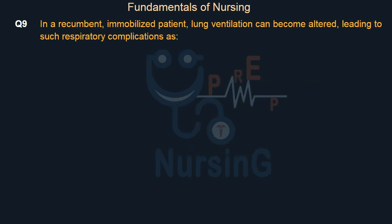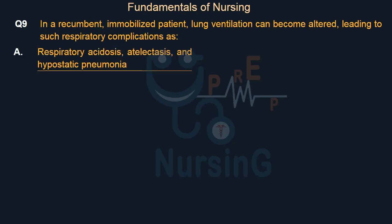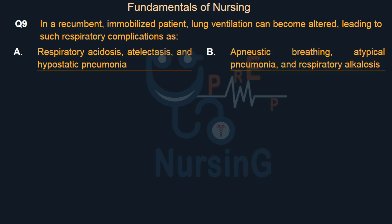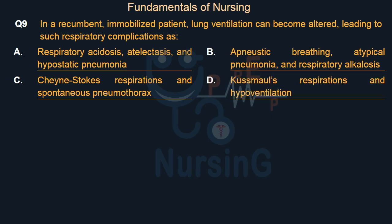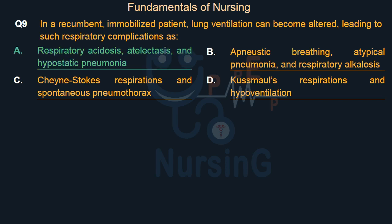In a recumbent, immobilized patient, lung ventilation can become altered, leading to such respiratory complications as: Option A: Respiratory acidosis, atelectasis, and hypostatic pneumonia. Option B: Apneustic breathing, atypical pneumonia, and respiratory alkalosis. Option C: Cheyne-Stokes respirations and spontaneous pneumothorax. Option D: Kussmaul's respirations and hypoventilation. Right answer is Option A.